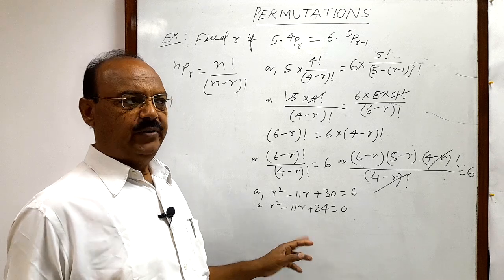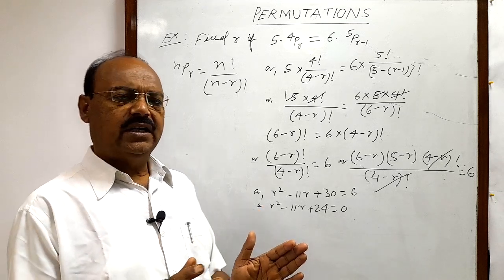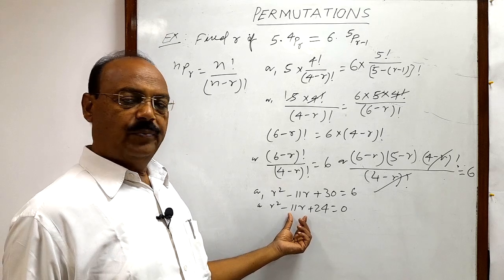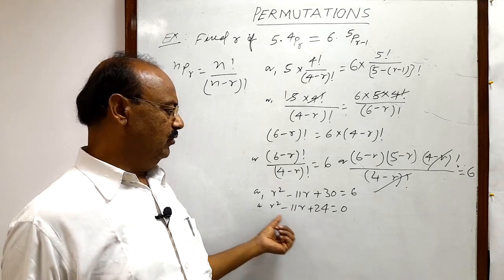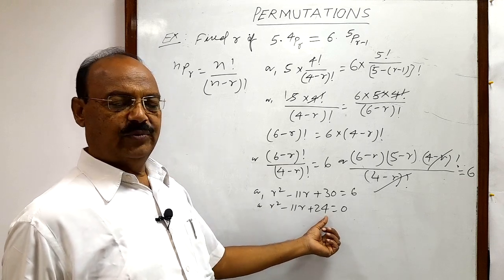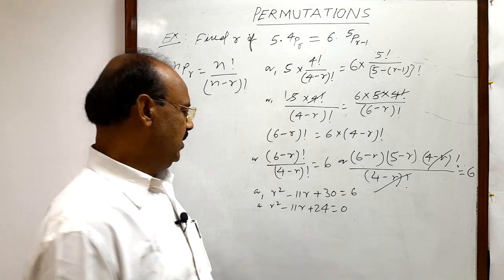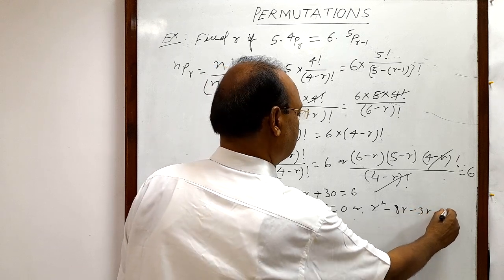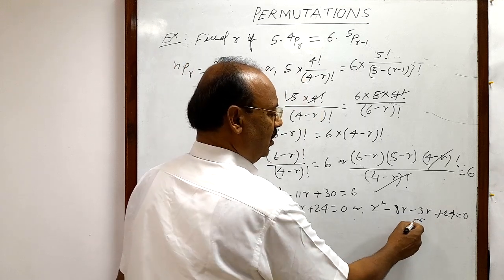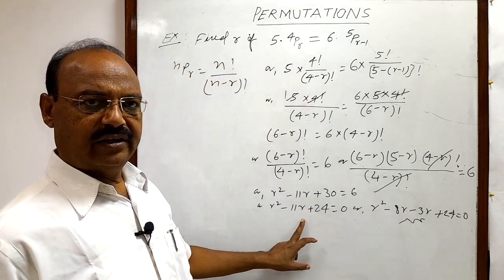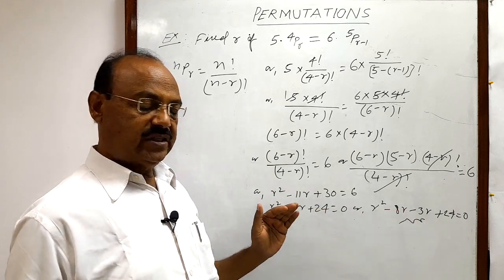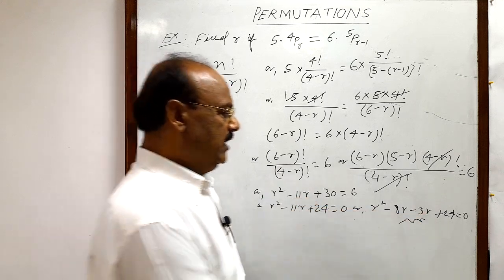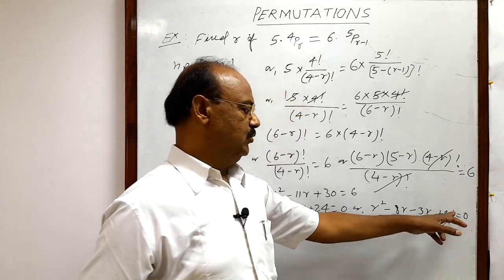We need to split minus 11r into two parts such that their sum is minus 11r and their product equals 24r², which is the product of the first and last terms. This gives us r² minus 8r minus 3r plus 24 equals 0. Checking: minus 8r plus minus 3r equals minus 11r, and minus 8r times minus 3r equals 24r². This is correct.